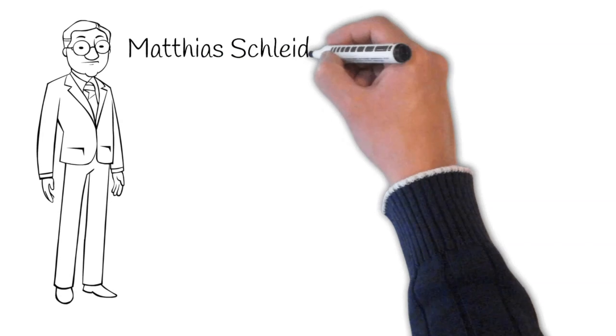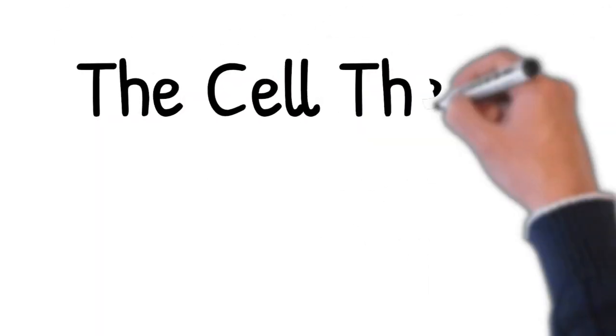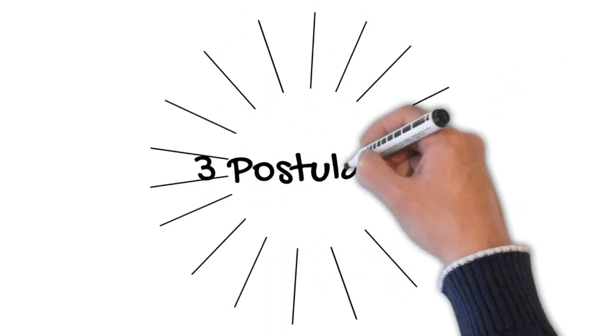Together with two other scientists named Matthias Schladen and Theodor Schwann, they came up with a cell theory. The theory includes three postulates.